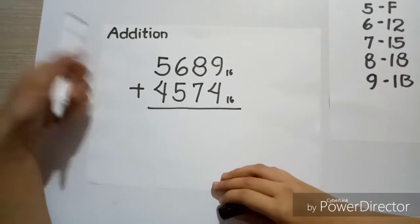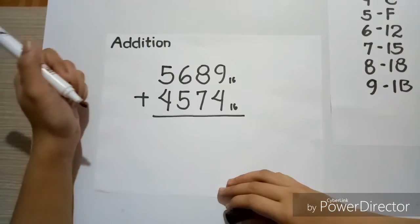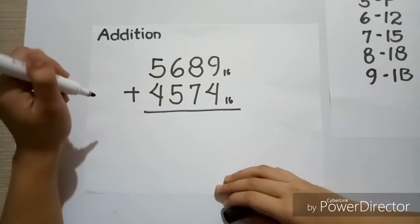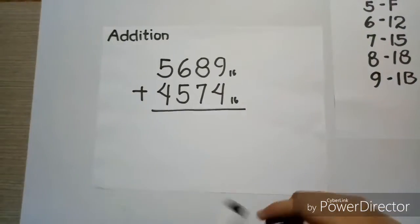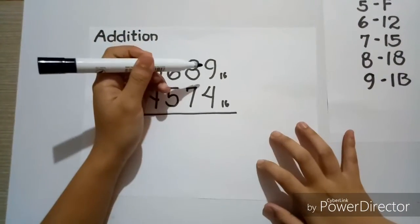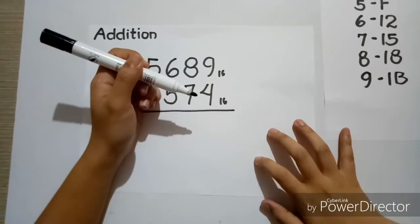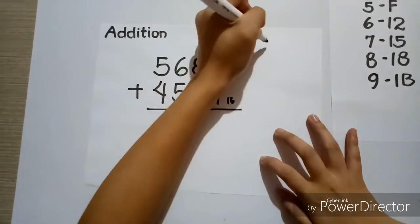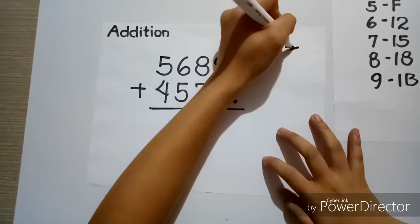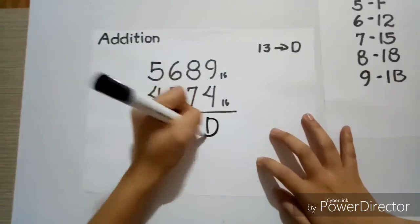For the addition, let's have 5689 base 16 plus 4574 base 16 as an example. Now, 9 plus 4 is equal to 13, and 13 is represented by D, so let's write D.